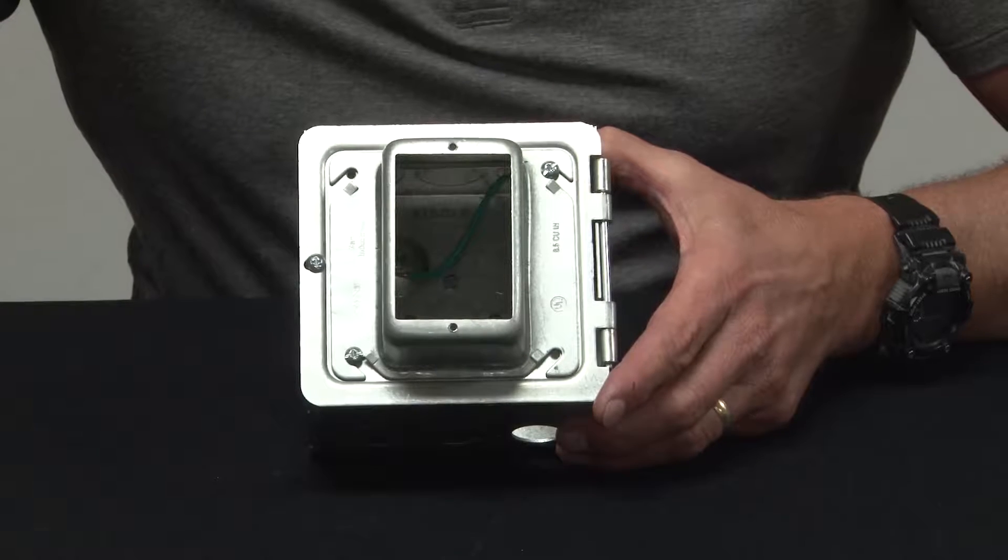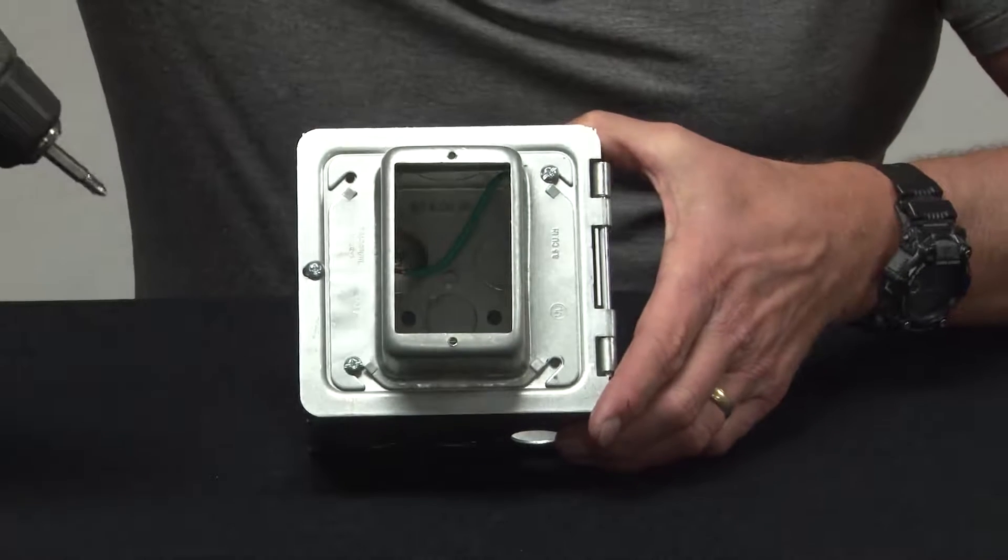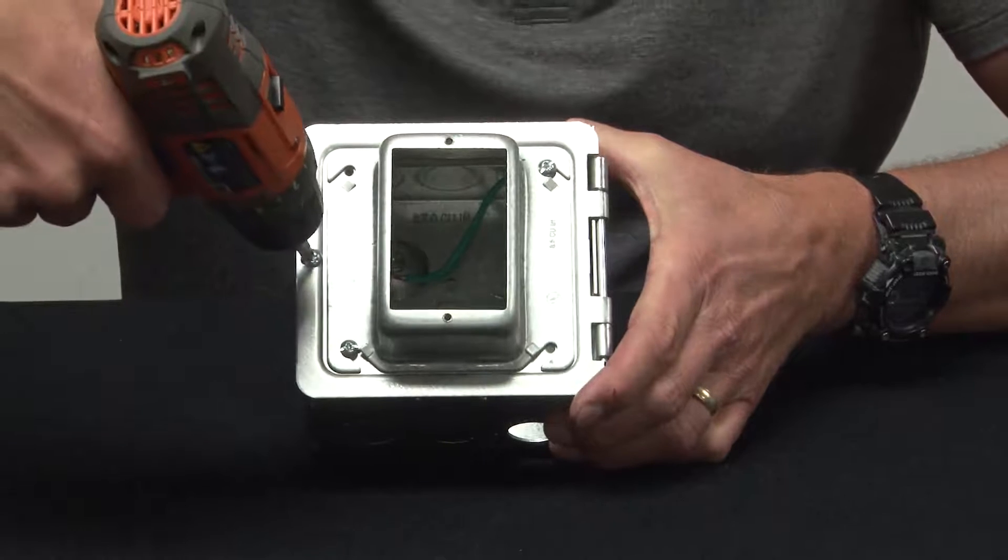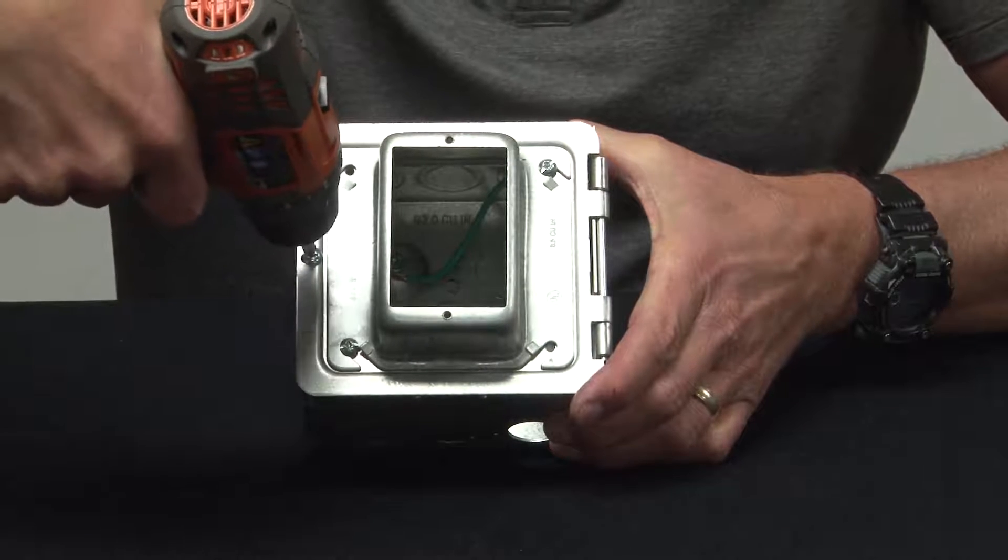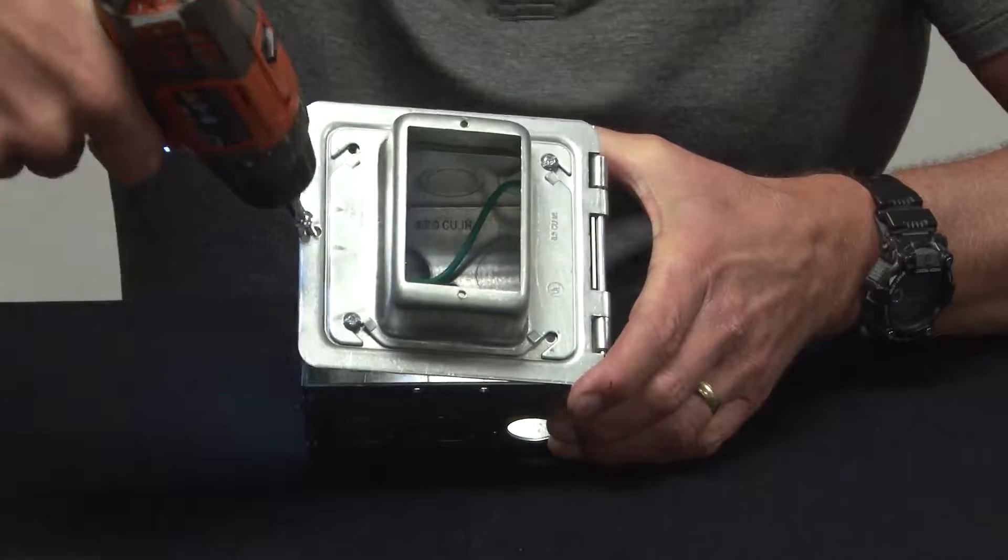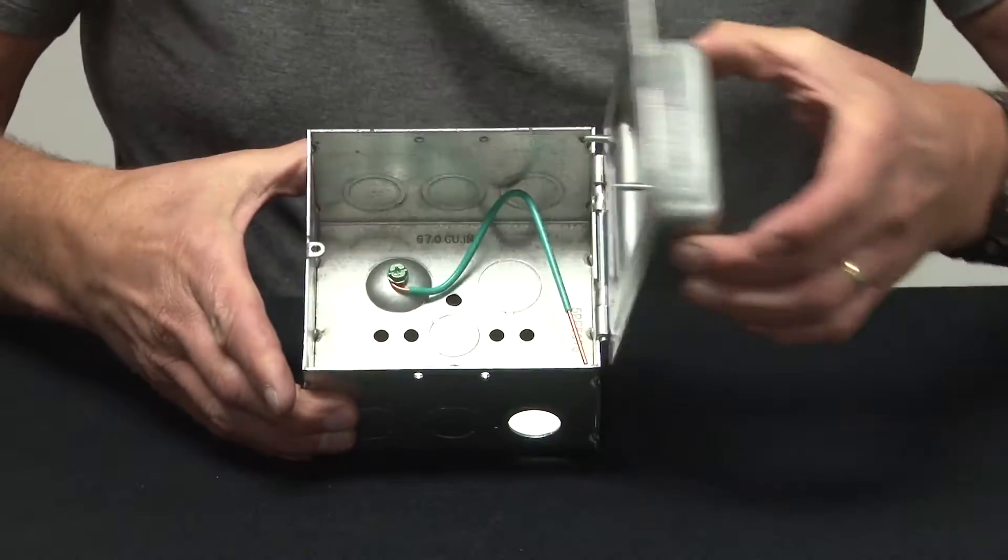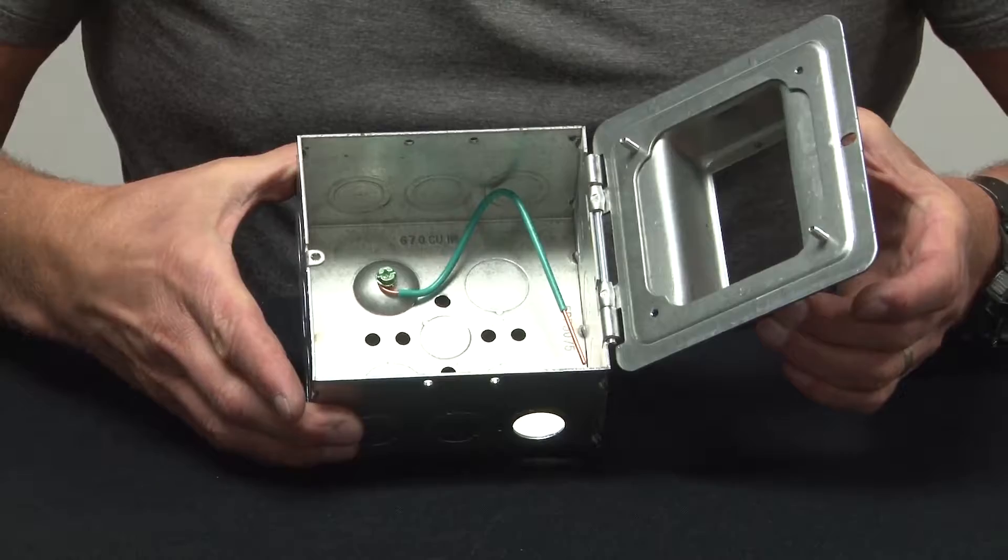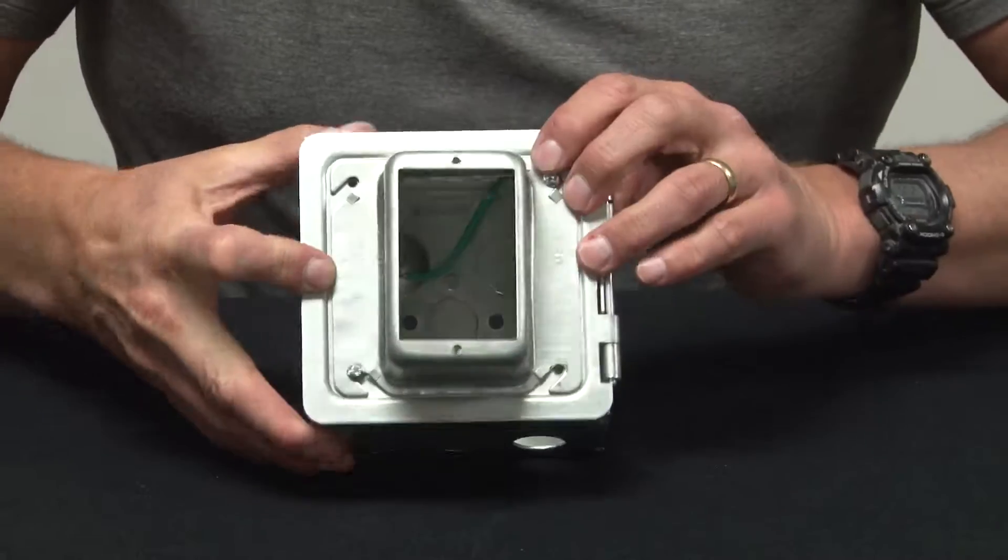All they have to do is loosen the set screw, open the hinge door, terminate the devices inside the box, close the door, and screw it down.